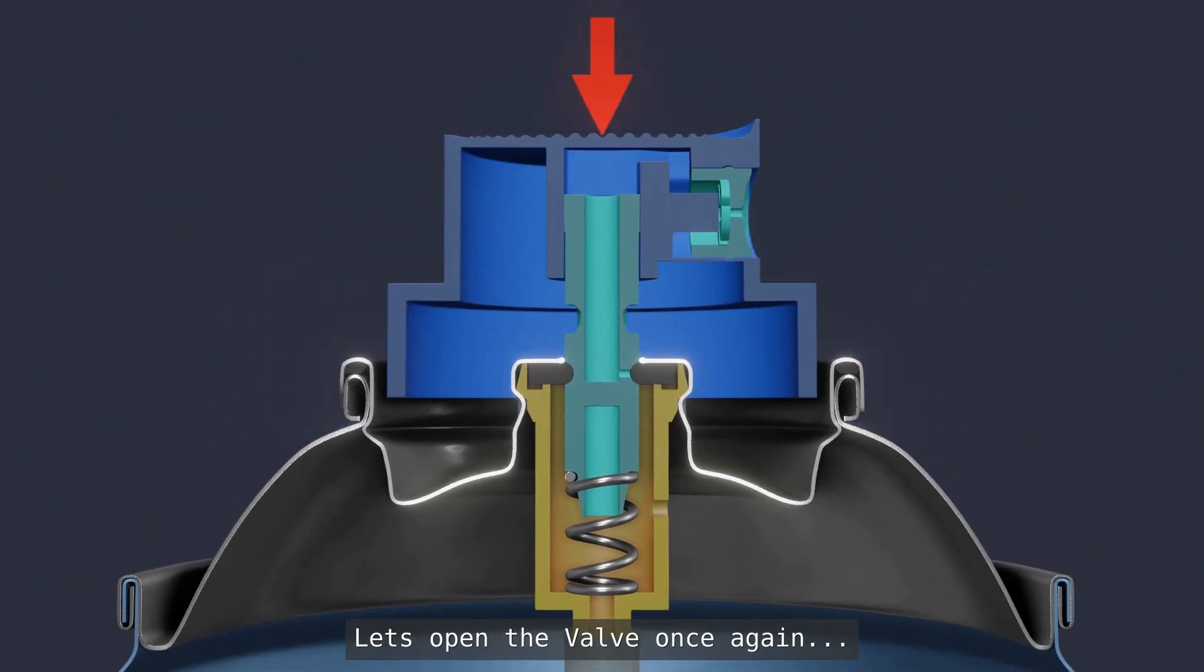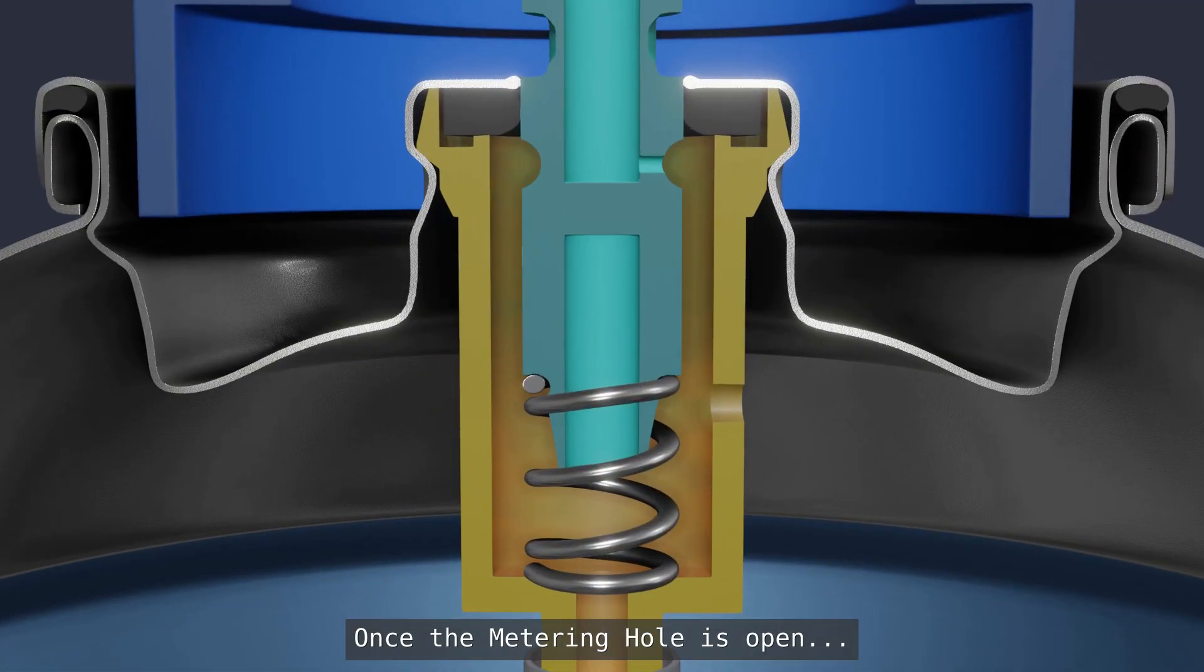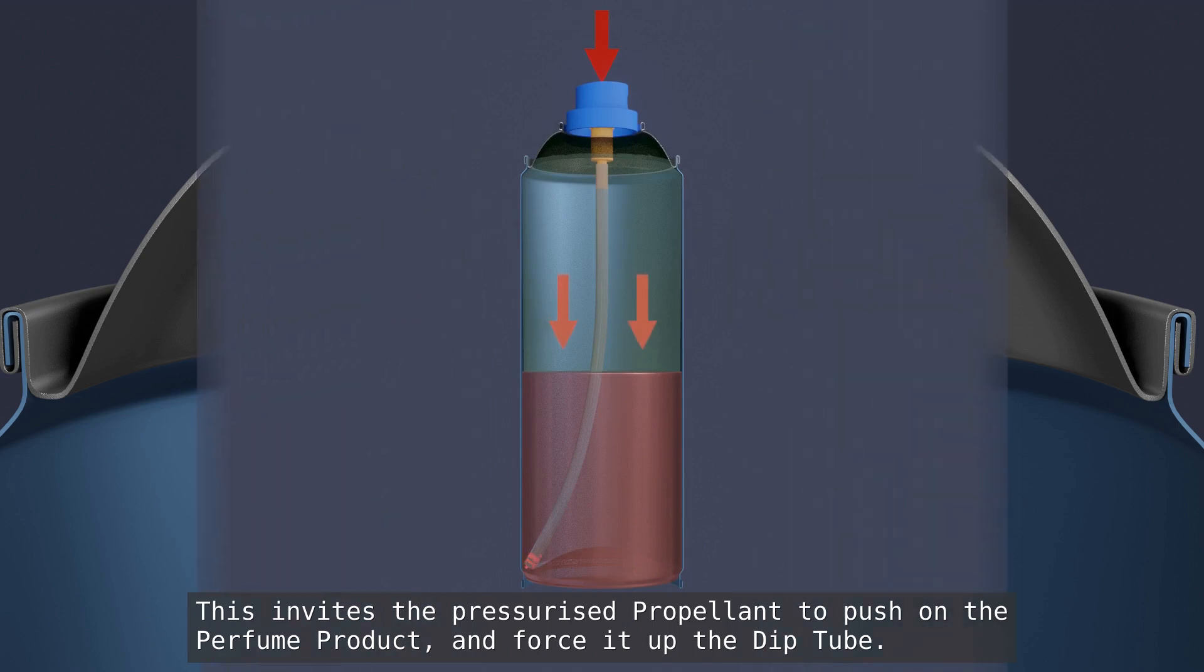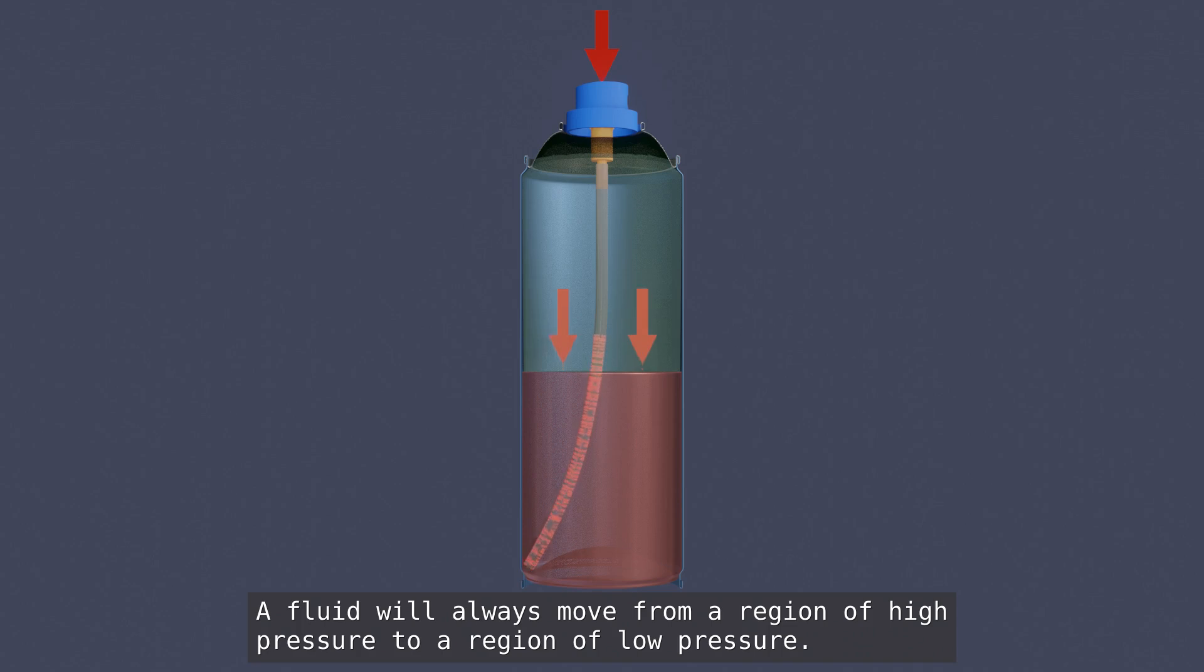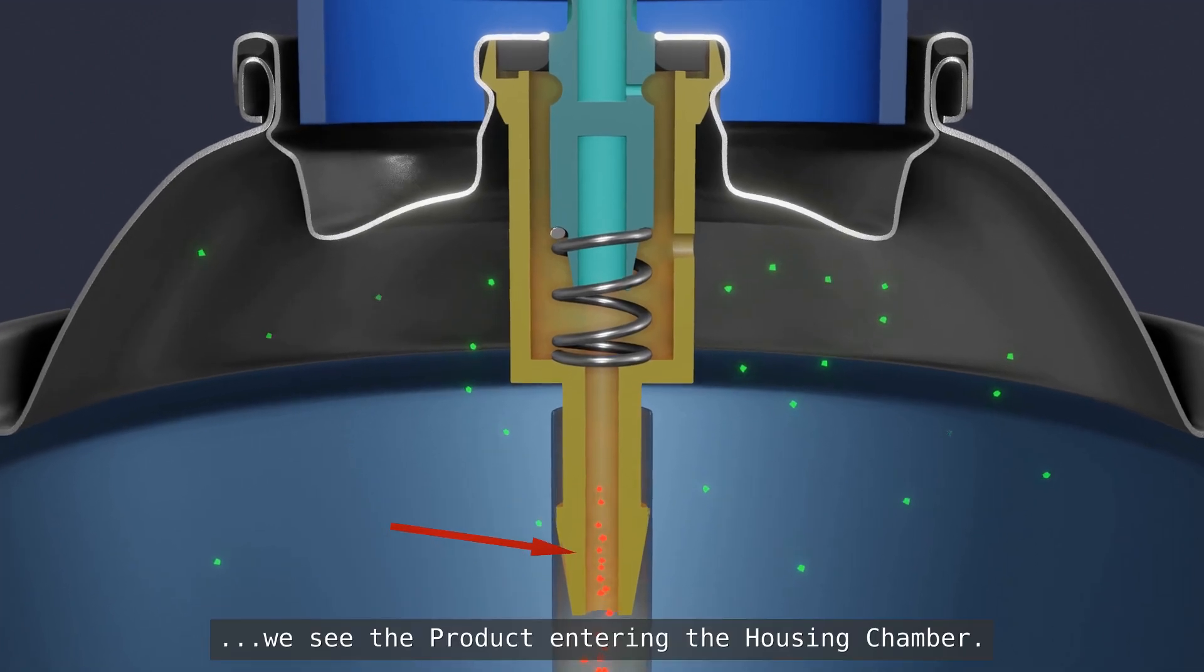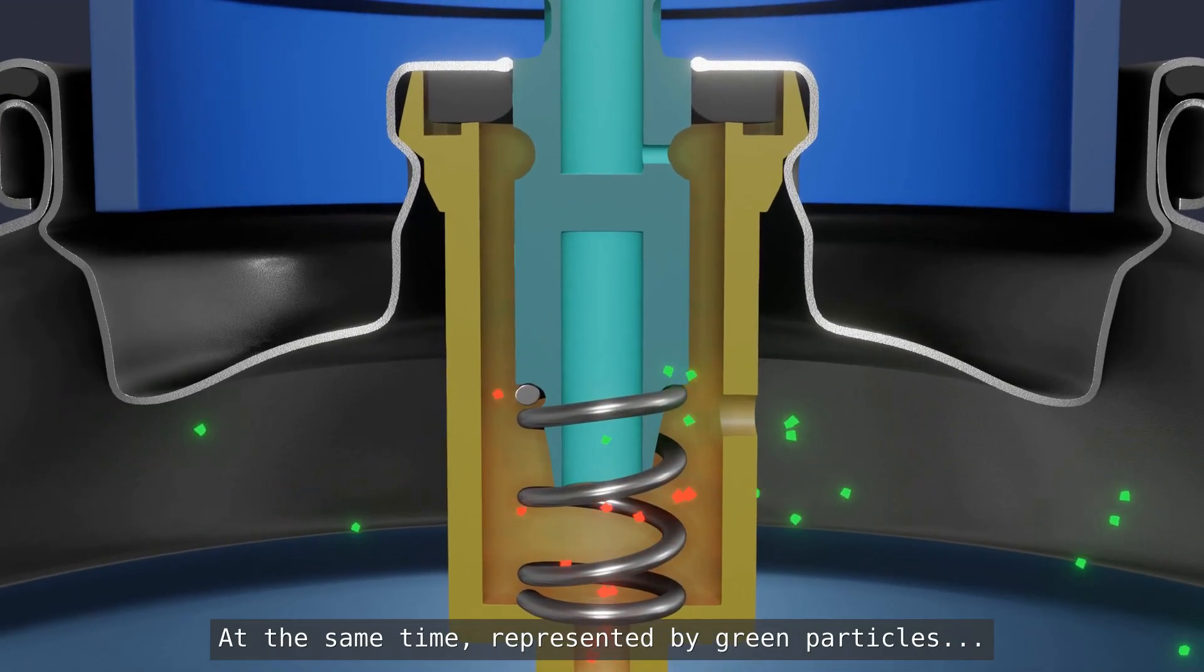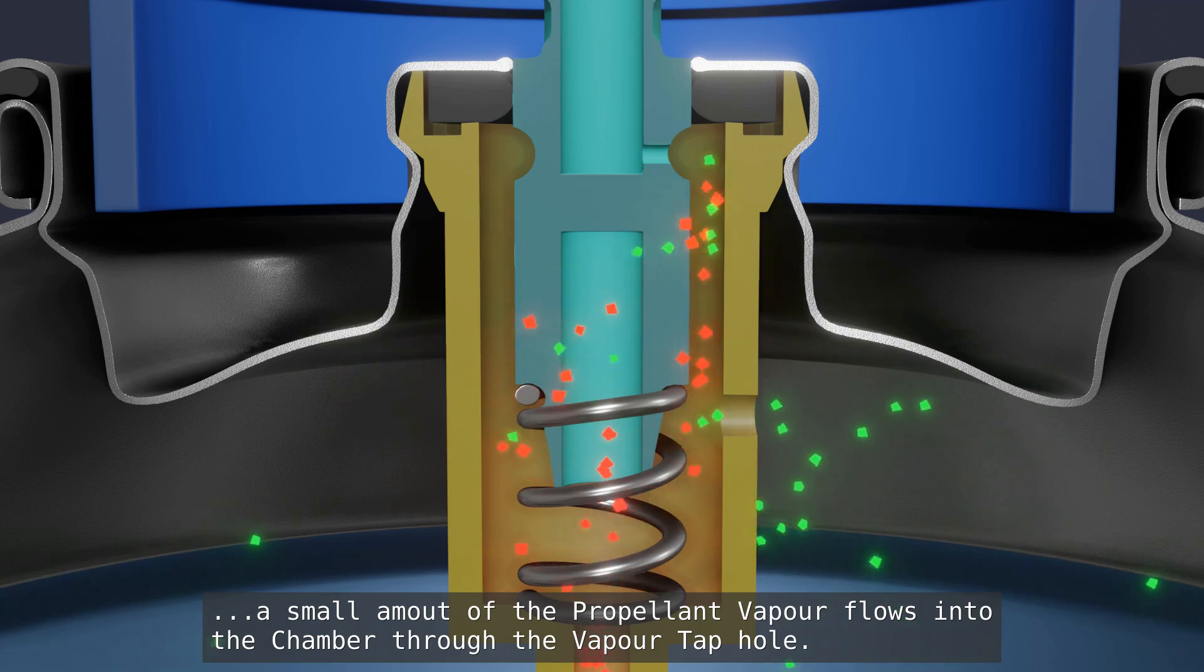Let's open the valve once again and explain product movement. Once the metering hole is open, things immediately start happening. A low pressure zone is created in the housing chamber. This invites the pressurized propellant to push on the perfume product and force it up the deep tube. A fluid will always move from a region of high pressure to a region of low pressure. Represented by red particles, we see the product entering the housing chamber. At the same time, represented by green particles, a small amount of the propellant vapor flows into the chamber through the vapor tape hole.